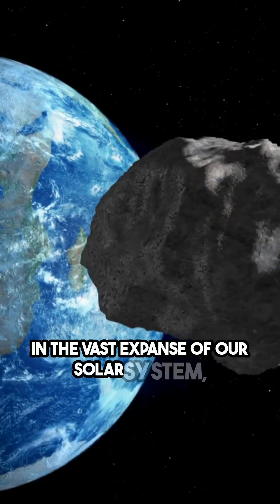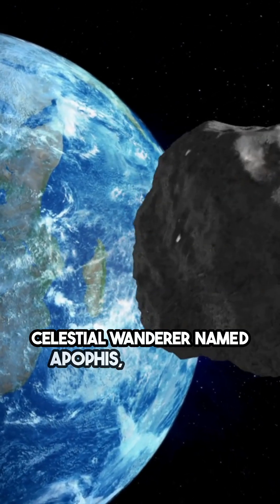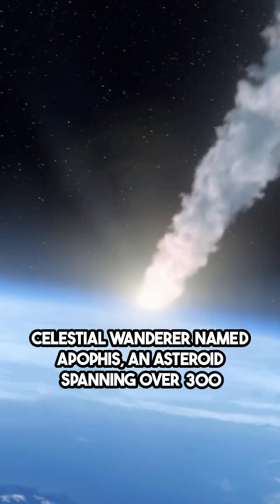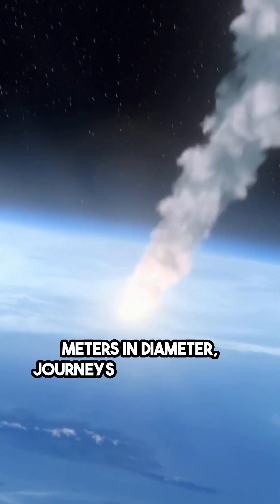In a vast expanse of our solar system, a celestial wanderer named Apophis, an asteroid spanning over 300 meters in diameter, journeys close to Earth.